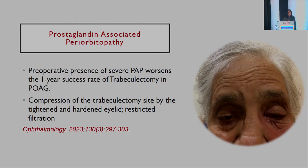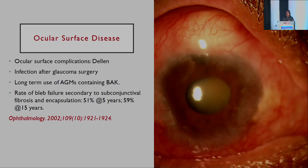Patients who have been taking long-term prostaglandins develop prostaglandin-associated periorbitopathy, which makes the lids quite thick, and that can influence the pressure these lids put on the blebs we have created. Preoperative presence of PAP has been shown to worsen the one-year success rate of trabeculectomy in POAG patients, and it's important to address this issue well in time, because once subtle signs of PAP appear, it's a good idea to shift your patients toward surgery.